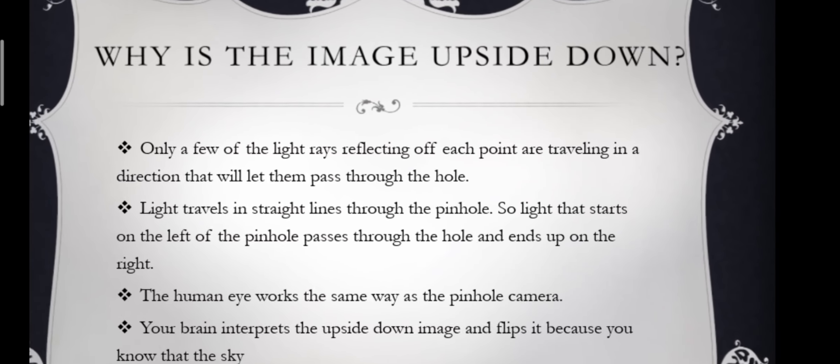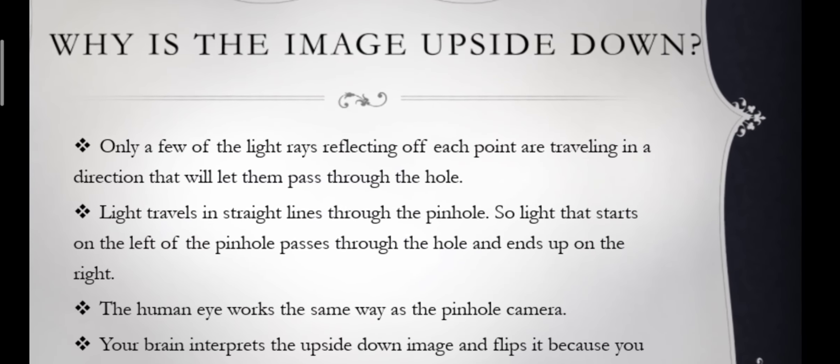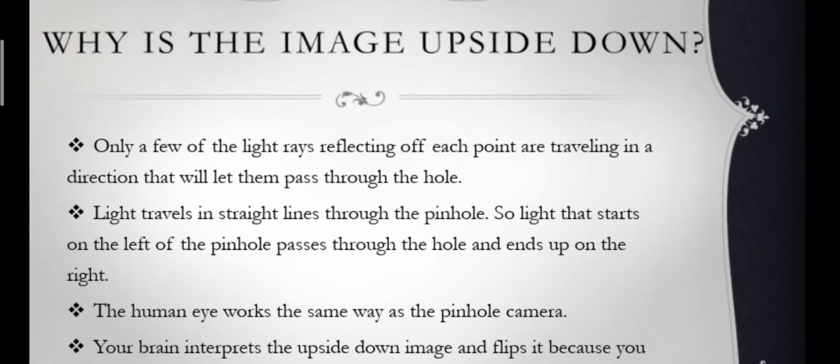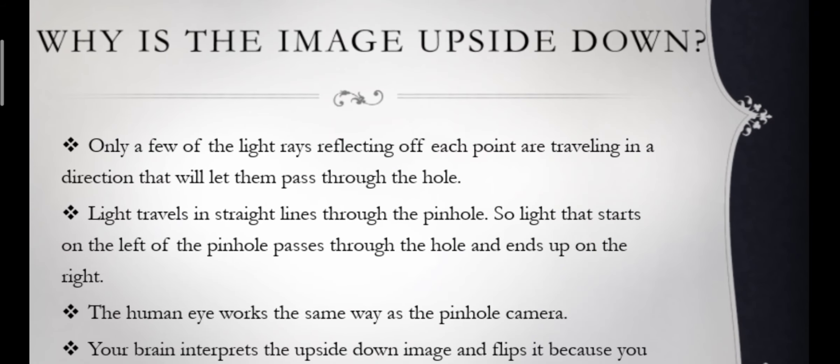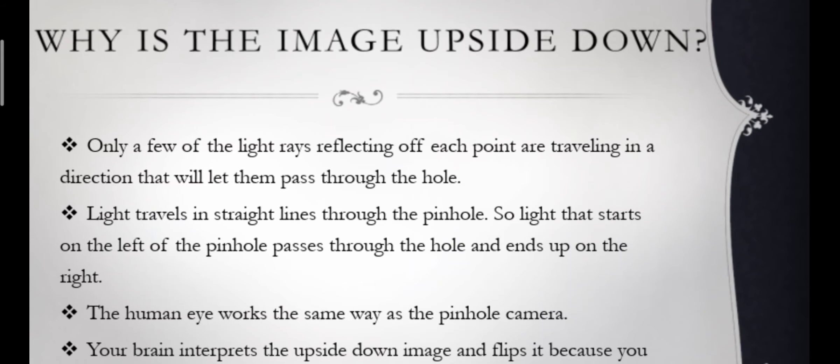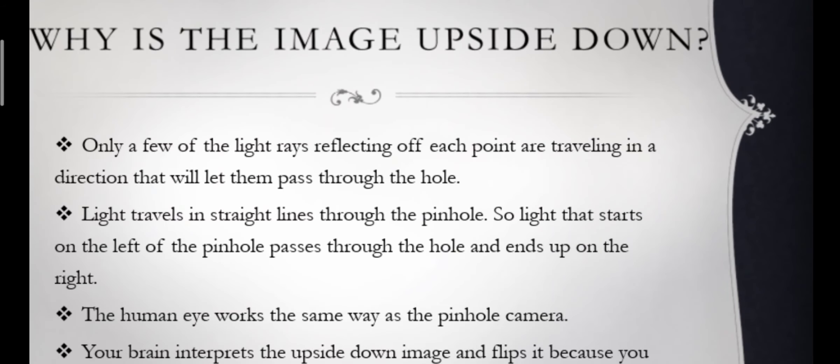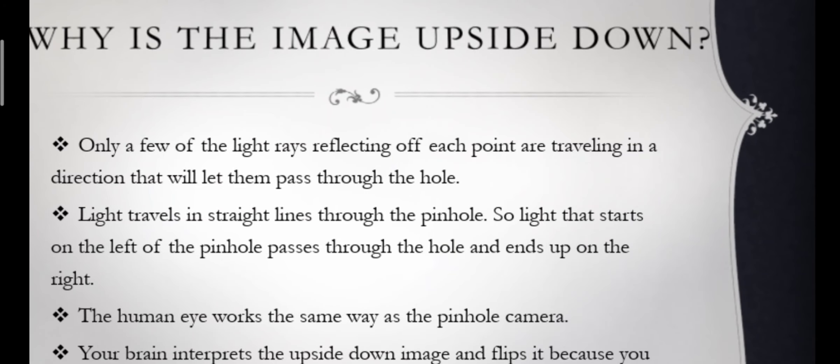Why is the image upside down? Only a few light rays reflecting off each point are traveling in a direction that will let them pass through the hole. Light travels in straight lines through the pinhole, so light that starts on the left of the pinhole passes through the hole and ends up on the right.